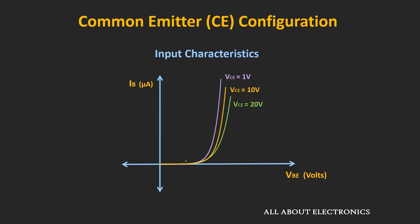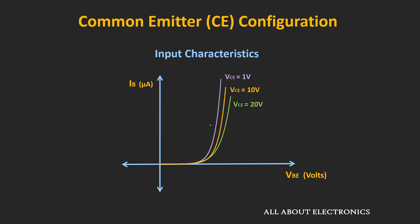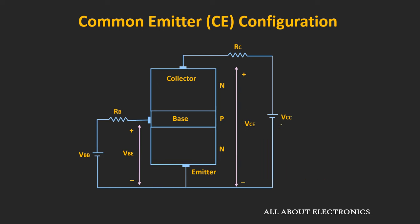If you look at these curves, they are similar to the forward characteristic of a p-n junction diode, because the base-emitter junction on the input side is forward biased. One more thing to observe is that as the value of Vce increases, this base current Ib reduces. The voltage Vce can be given as voltage Vcb plus voltage Vbe — that is, the voltage between the collector-to-base terminal and the voltage between the base and emitter terminal.